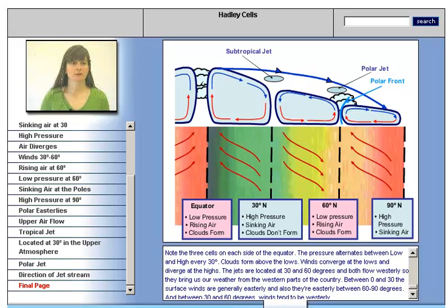Between 0 and 30 degrees, the surface winds are generally easterly, and they're also easterly between 60 and 90 degrees. In between 30 and 60 degrees, winds tend to be westerly.